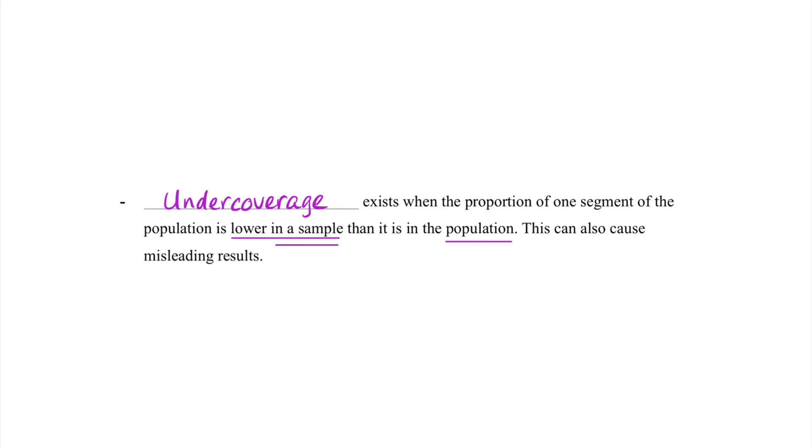For example, let's say we have a class made up of 70% females and 30% males. Well, if we conduct a survey where I ask five females and five males, that actually causes a possible issue of undercoverage because the 50-50 split does not represent the population of 70 to 30 females to males.